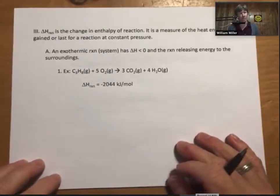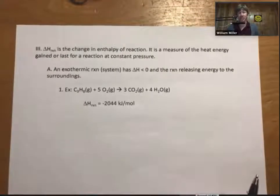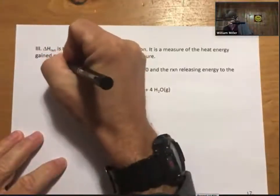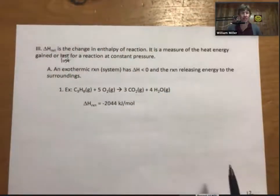Now, Roman numeral 3, where we introduce what's called delta H reaction. It is the change in enthalpy of reaction, and functionally, or a working definition, is it is a measure of the heat energy gained or lost for a reaction at constant pressure.